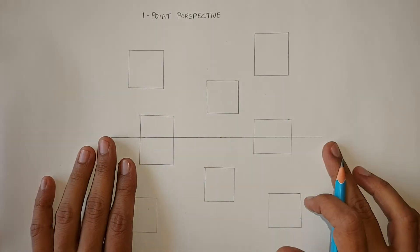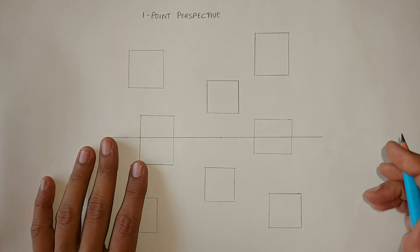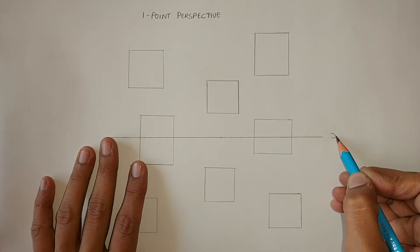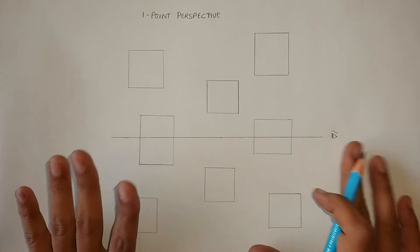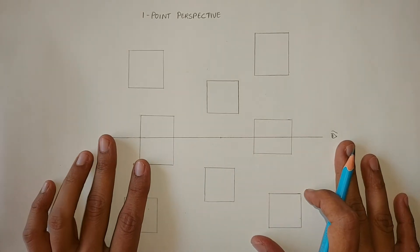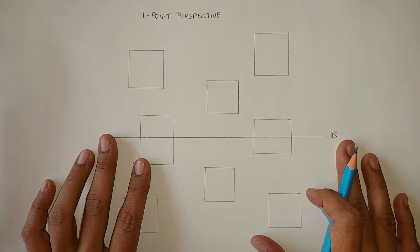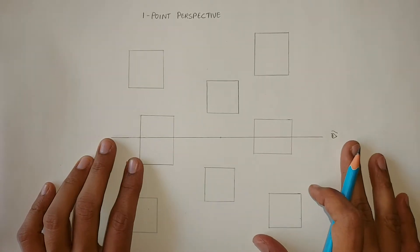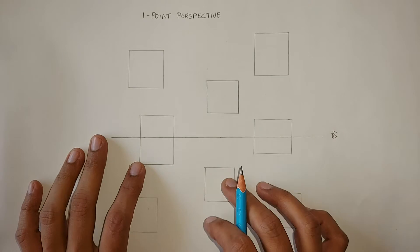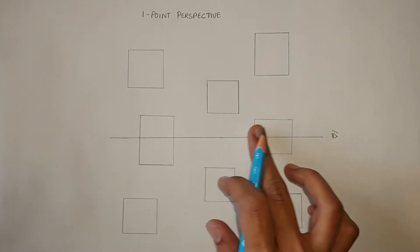By now, you all know that the horizon line is our eye level. Now, I have drawn some squares here and these four squares are just above and on sides of the vanishing point.